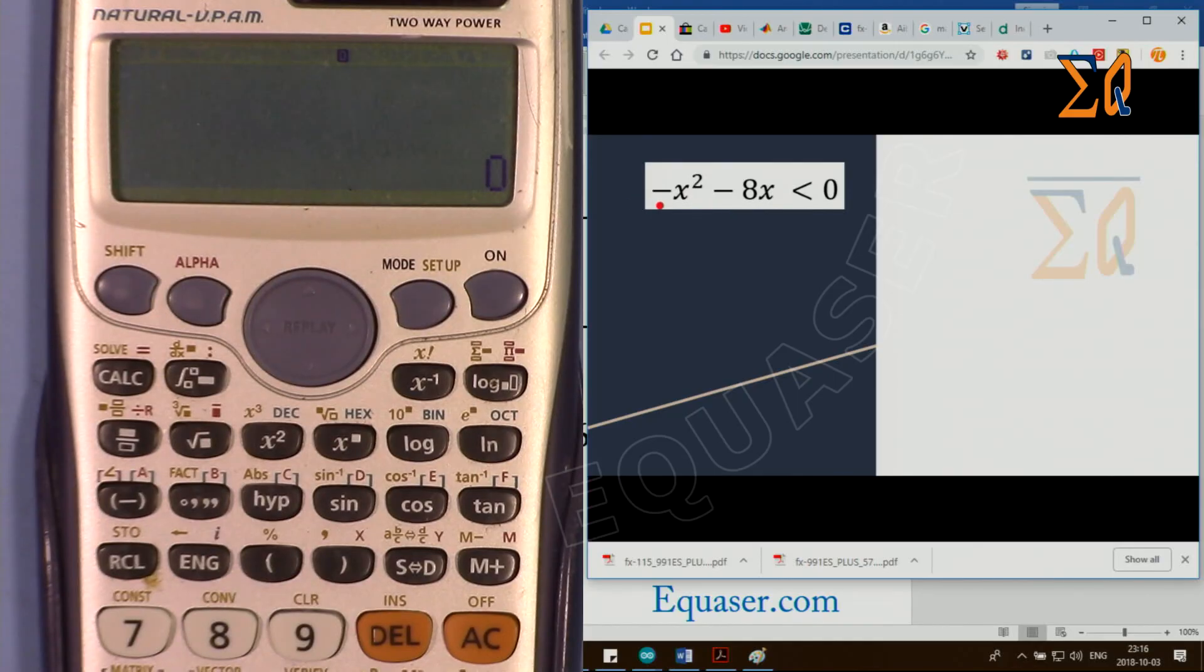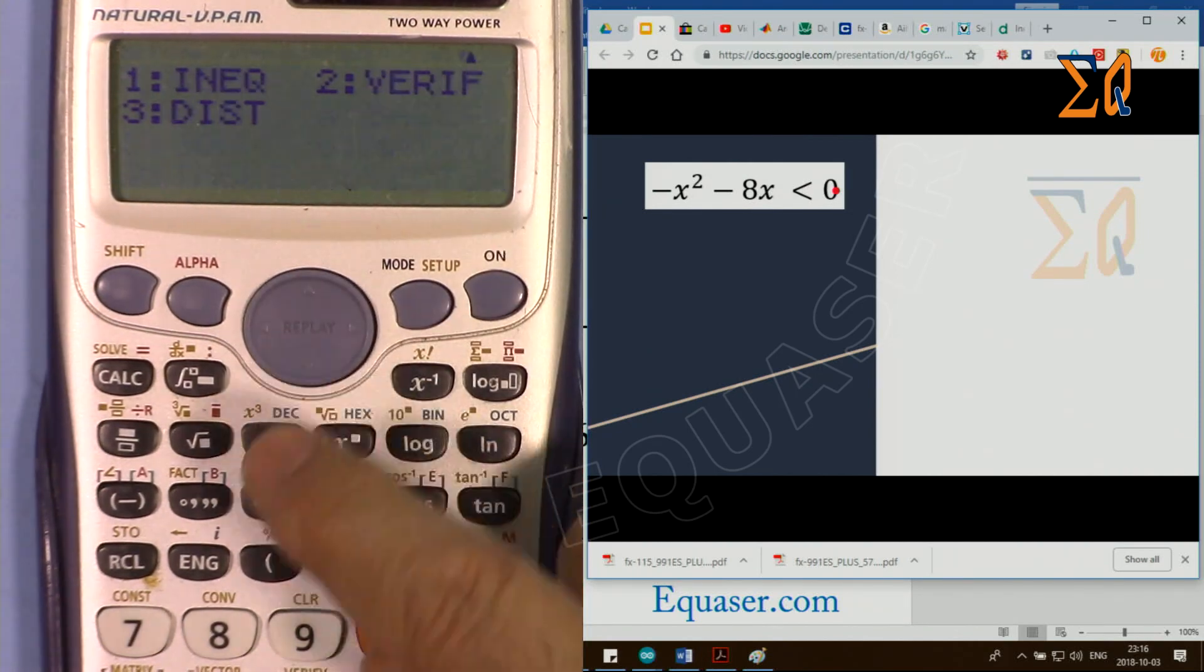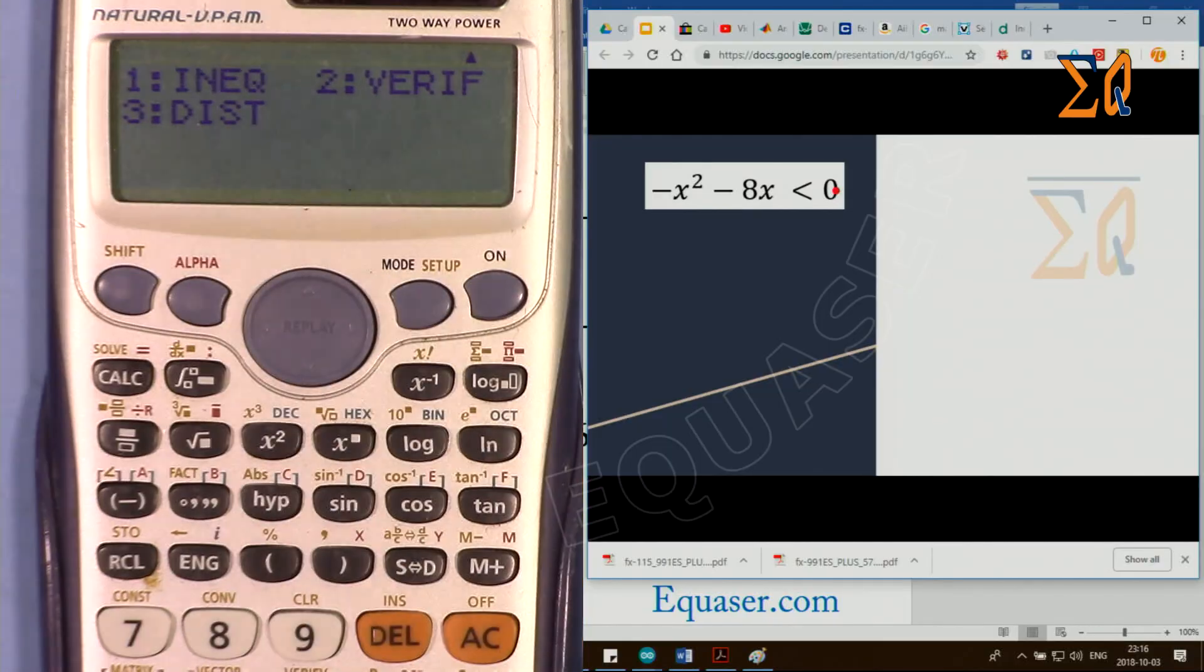Now let's solve this one: we will see that −x² − 8x, at what value of x is y smaller than 0. To do that, press mode, with this arrow scroll down and then press 1.